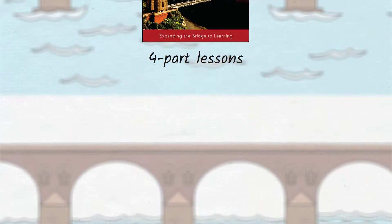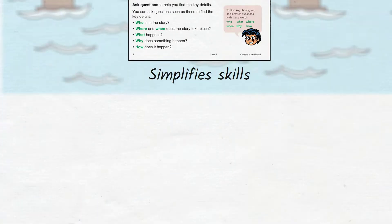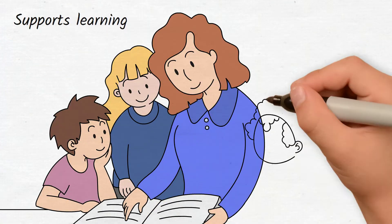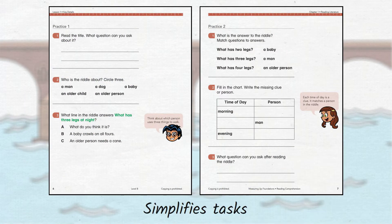Four-part lessons begin with relevant explanations that provide context for new learning and step-by-step instruction. Guided instruction supports students as they learn the skill, and two sets of practice provide the opportunity to use the skill on their own.